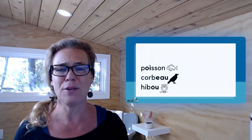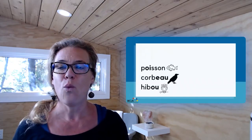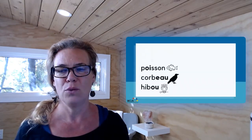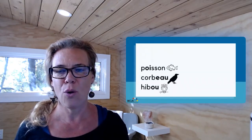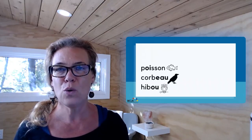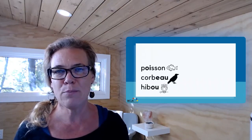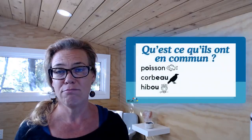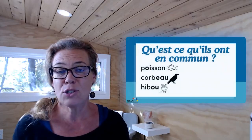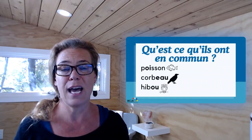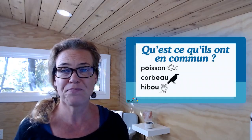Let me show you an example. Oie — poisson. Eau — corbeau. Ou — hibou. Alors, qu'est-ce qu'ils ont en commun? What do these three things have in common?